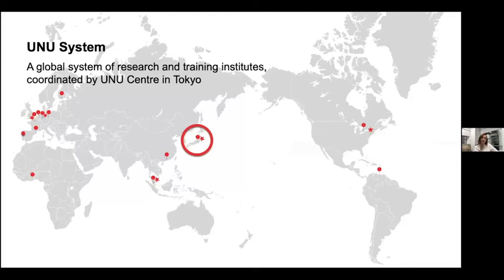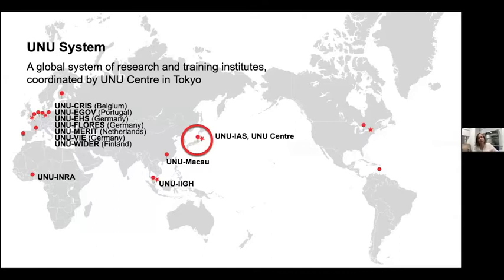The UN University system is a global system of research and training institutes, coordinated by the UN University Centre in Tokyo. Each of the different dots on screen represents one of the different institutes. For example, UNU-IIGH, the International Institute for Global Health, is based in Kuala Lumpur in Malaysia, and they've just been awarded a sizeable grant from the Melinda Gates Foundation to generate evidence and accelerate action for gender equality in global health policy.